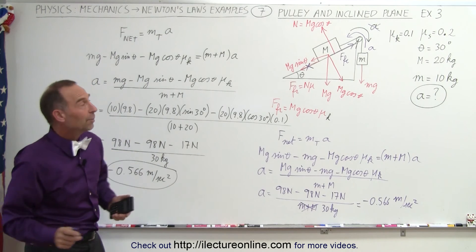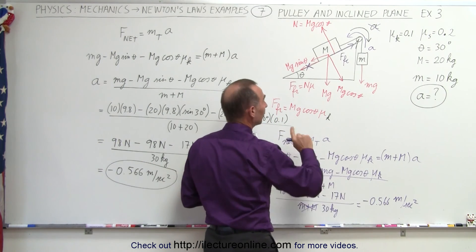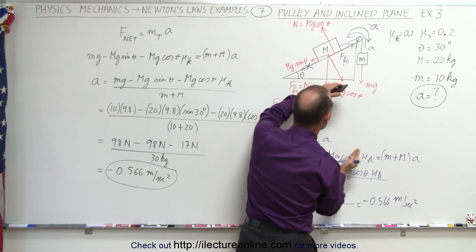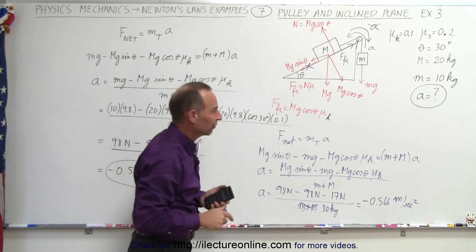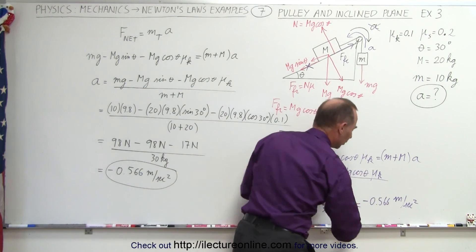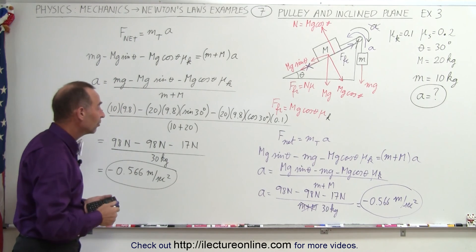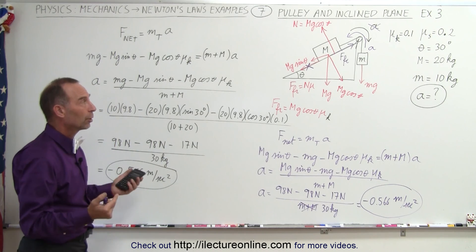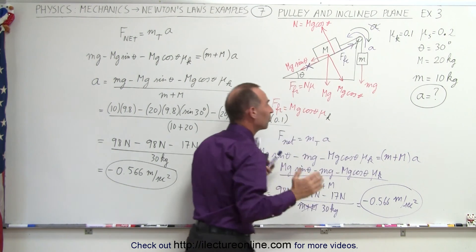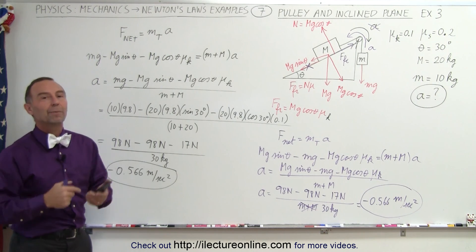Notice that if we assume acceleration is not in the clockwise direction and instead assume it's counterclockwise, plugging in all the values again — with big mg sine theta as the aiding force, little mg as the opposing force, and friction flipped to the other direction — we again get a negative value. We get a negative value for the clockwise case and a negative value for the counterclockwise case, which means neither can be a possible solution. The conclusion is that there is no acceleration in this system in either direction: the hanging mass is not large enough to cause clockwise acceleration and too large to cause counterclockwise acceleration, so the acceleration is zero and the system will not begin to move. If you try to get it to move, it will simply stop and remain stationary.